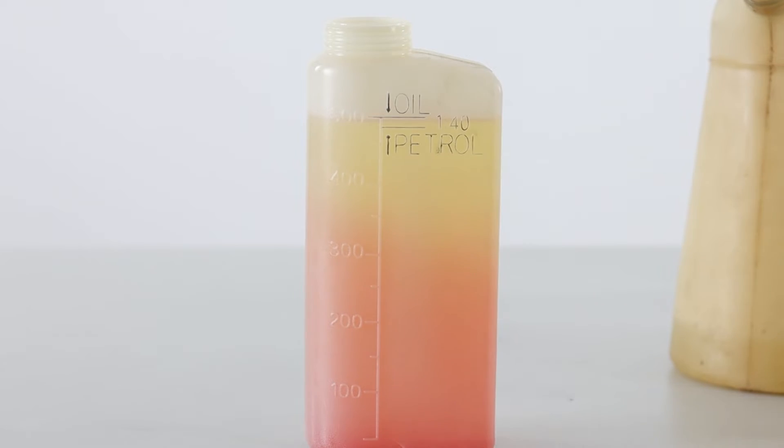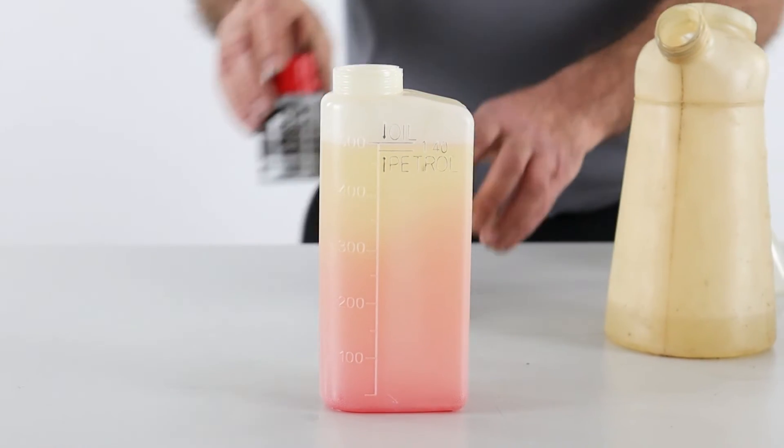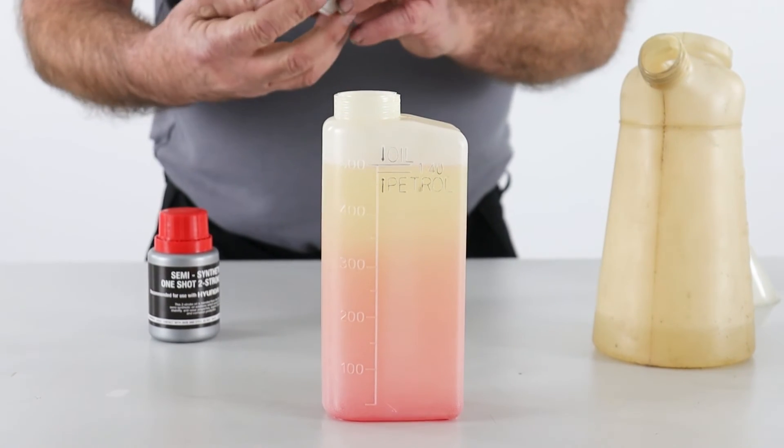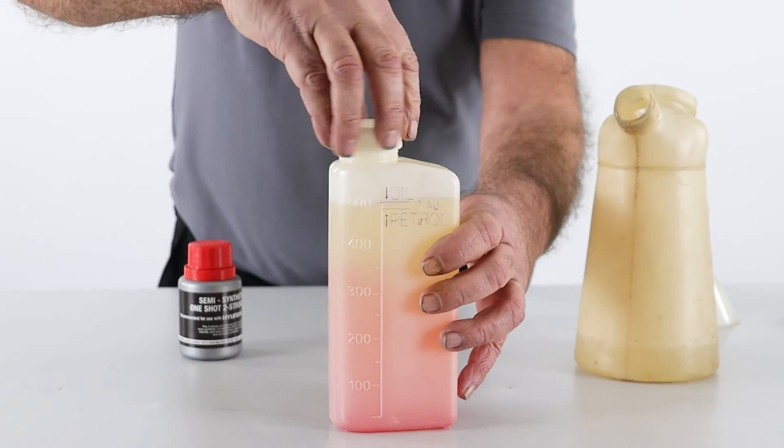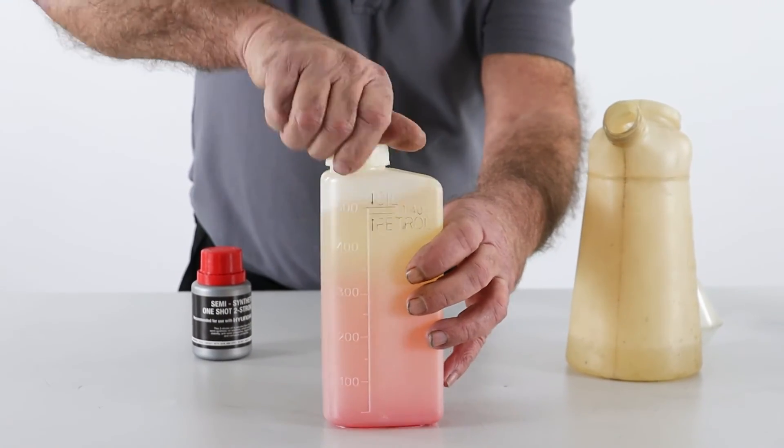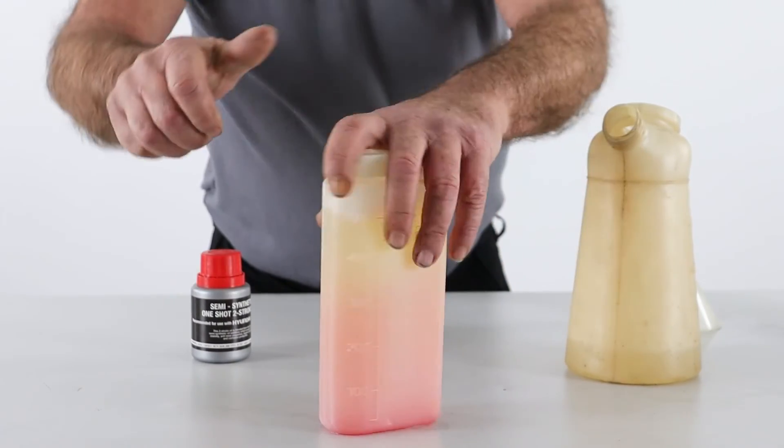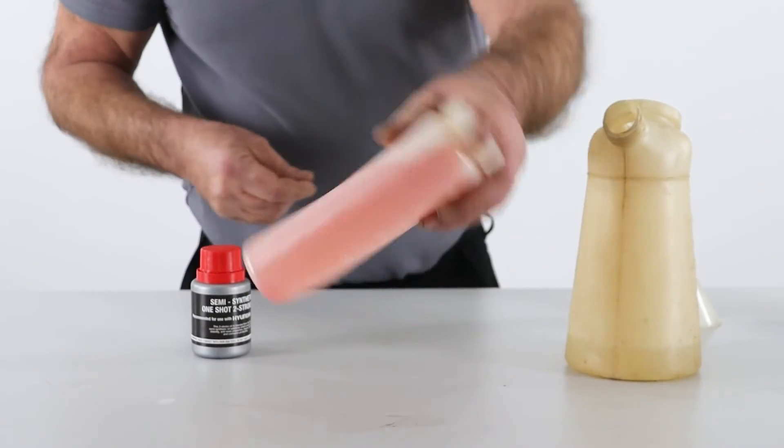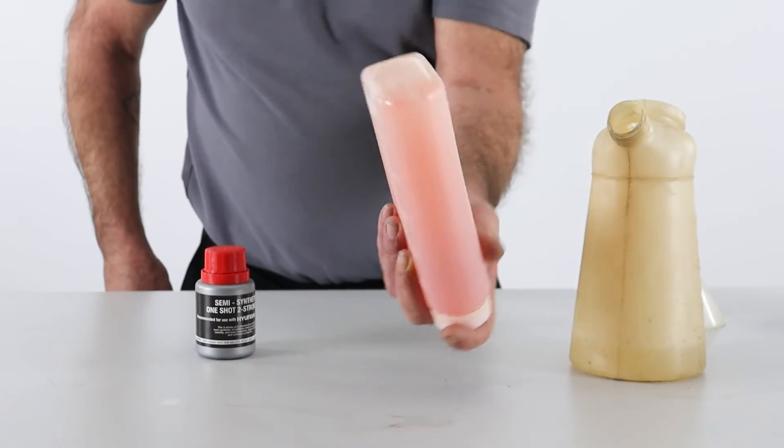So I'll just replace that lid. Now that would be the correct mixture at 40 to 1. Screw it down firmly and just make sure that the additive is mixed thoroughly in with the fuel.